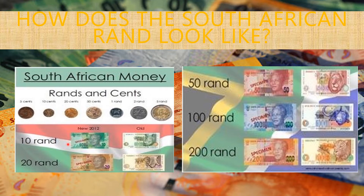The lowest bank note is 10 Rand. It's green in colour. The old one had a rhino at the back, and the new ones have Nelson Mandela in front.